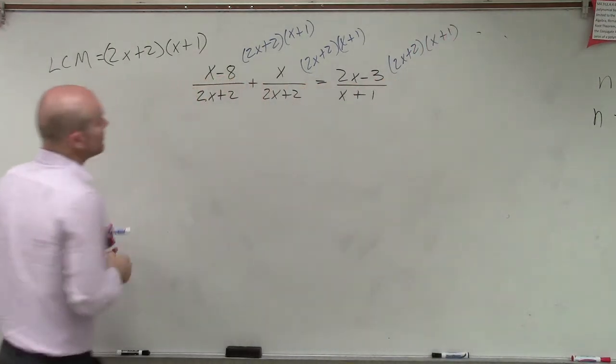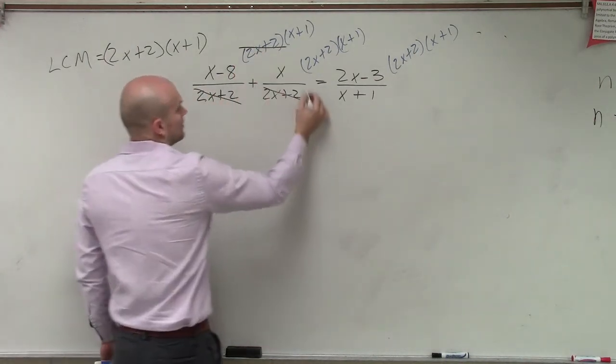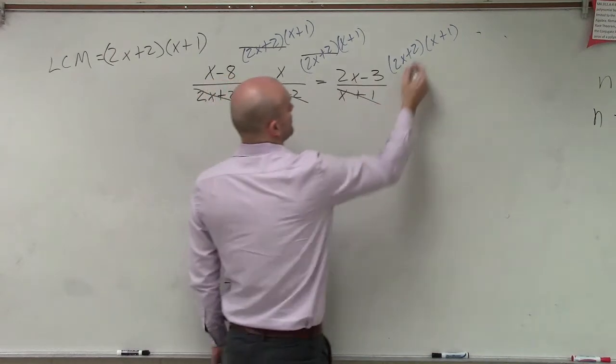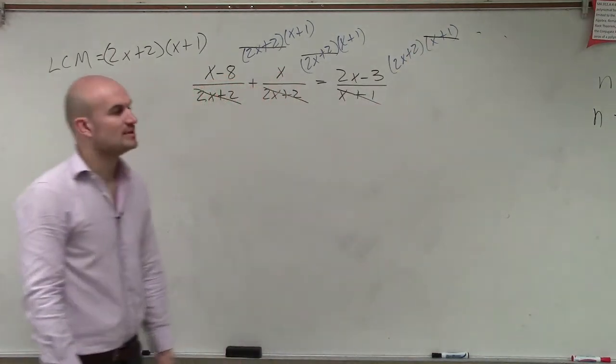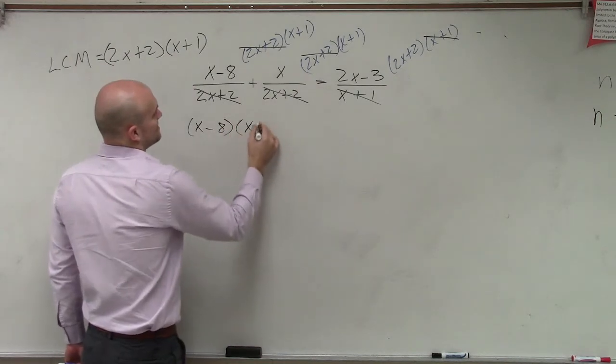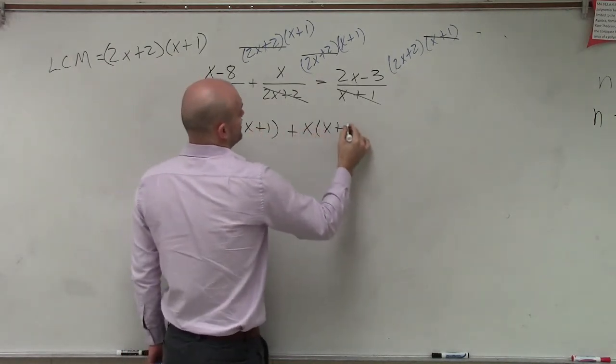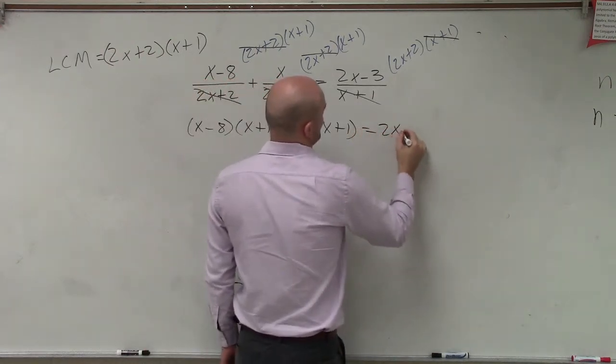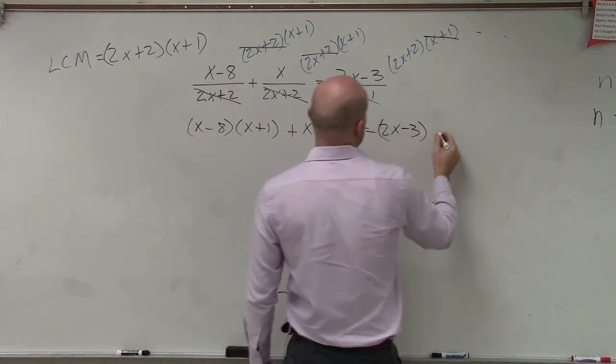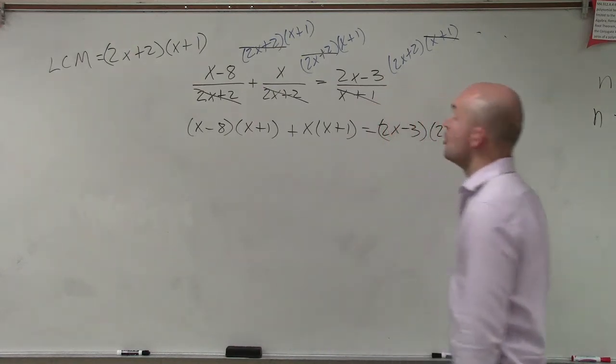And it's important, because now we notice that my 2x plus 2's divide out to 1, divide out to 1, and divide out to 1. So now I'm just left with x minus 8 times x plus 1 plus x times x plus 1 equals 2x minus 3 times 2x plus 2.